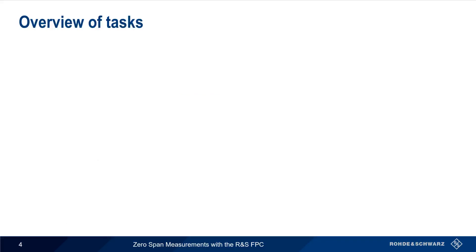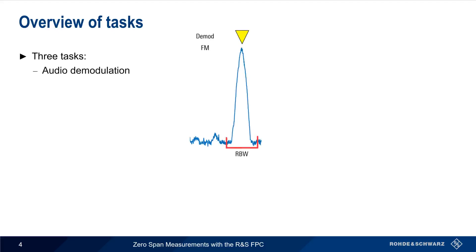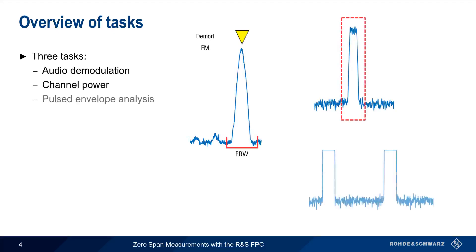To familiarize you with some of the different applications in zero-span, we're going to show how zero-span is used on the FPC to perform three different tasks: audio demodulation, a channel power measurement, and an analysis of a pulse signal's envelope. We'll start with audio demodulation.